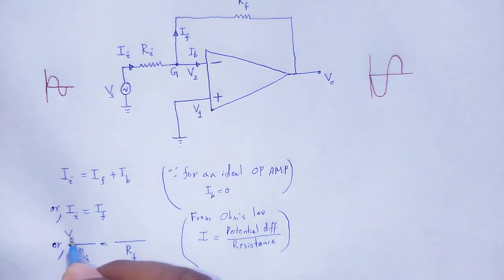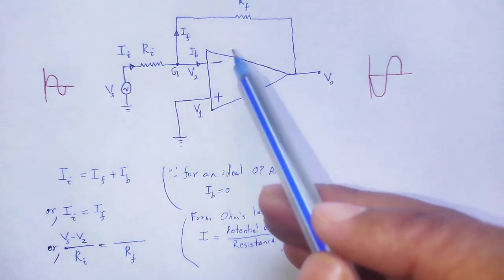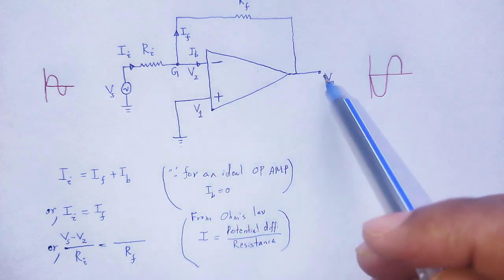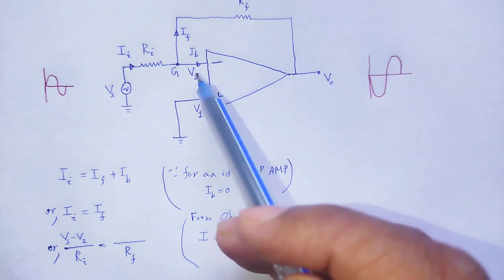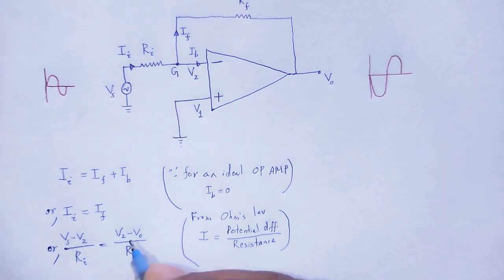So potential difference is Vs minus V2. Next, for If, that is the potential difference from V2 to Vo. That is the direction of flow of current, the potential difference V2 minus Vo.